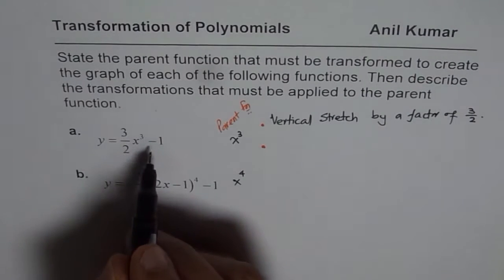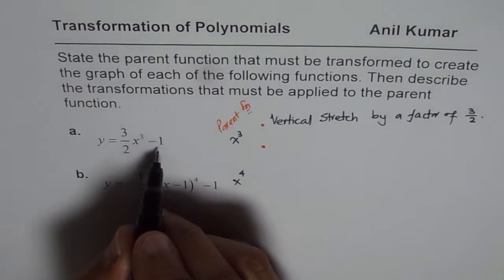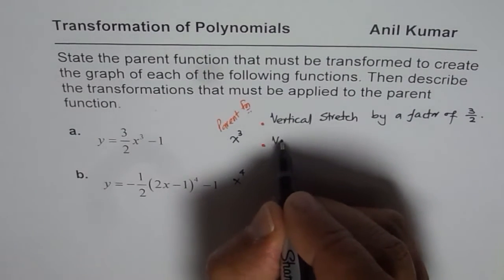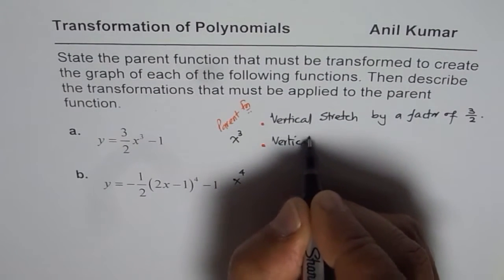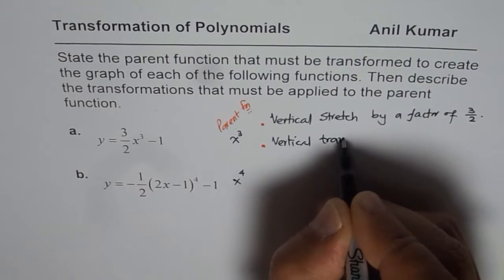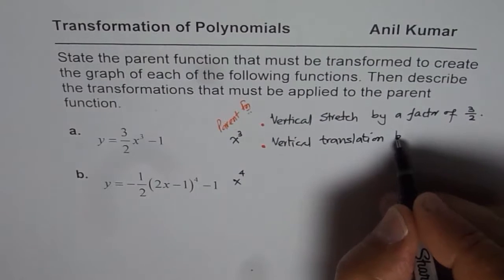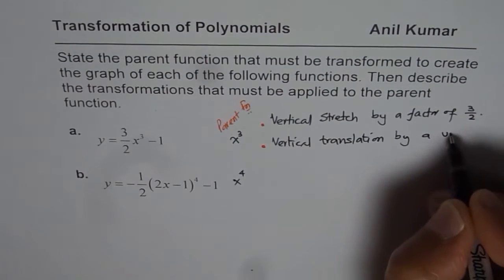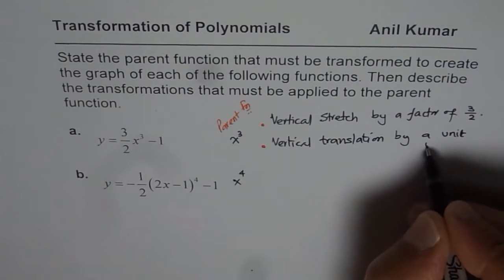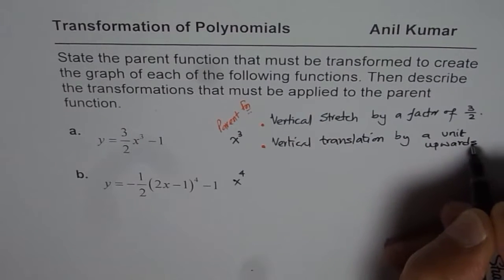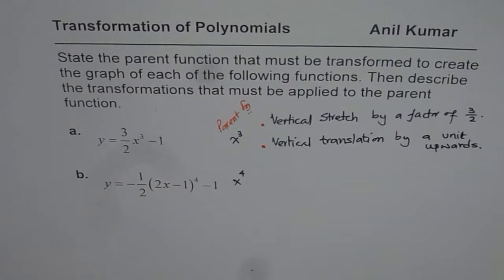And the second one is, it is translated up by one unit. Vertical translation by 1 unit upwards. So these are the two transformations for the first function.